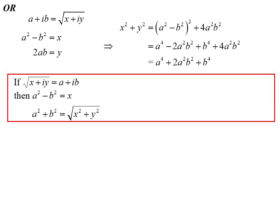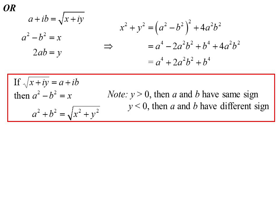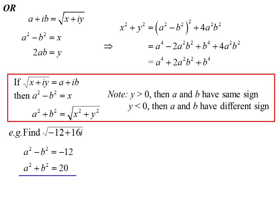There's a useful sign trick: if the imaginary part of the number you're finding the square root of is positive, then the real and imaginary parts of the answer will have the same sign; if the imaginary part is negative, they will have different signs. For minus 12 plus 16i: a squared minus b squared equals negative 12, and a squared plus b squared equals the square root of 144 plus 256, which is the square root of 400, equals 20. Adding gives 2a squared equals 8, so a squared equals 4.